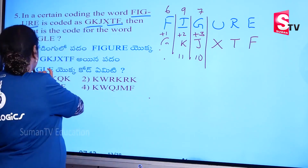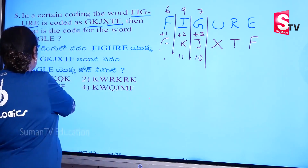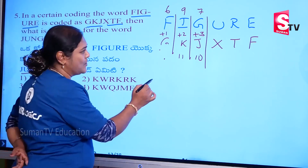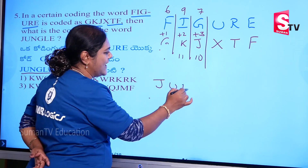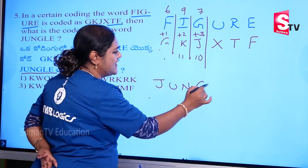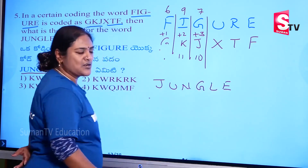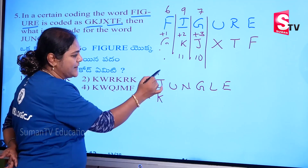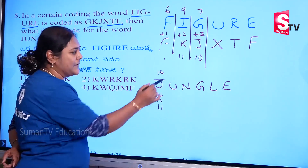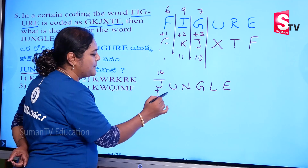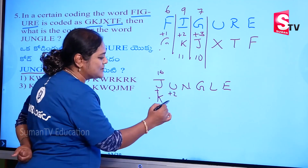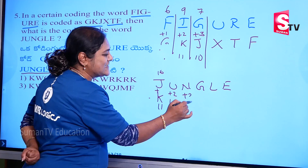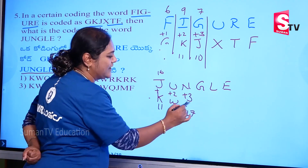So when we say the word JUNGLE: 10 plus 1 equals 11. Next T, plus 2: 21 plus 2 equals 23. And W, plus 3: 14 plus 3 equals 17.